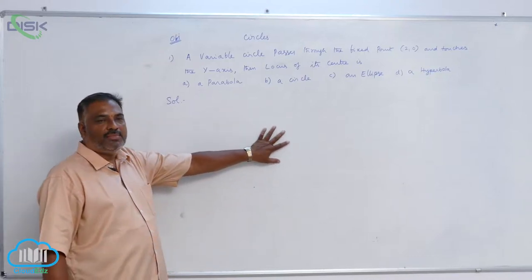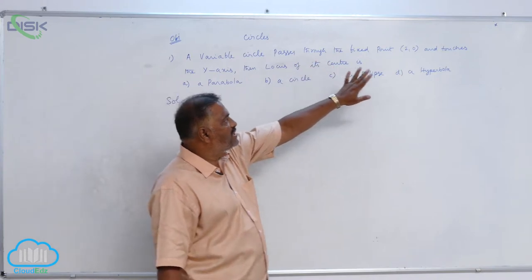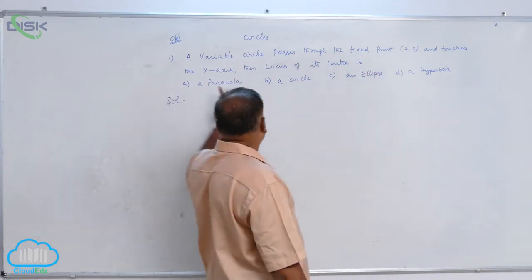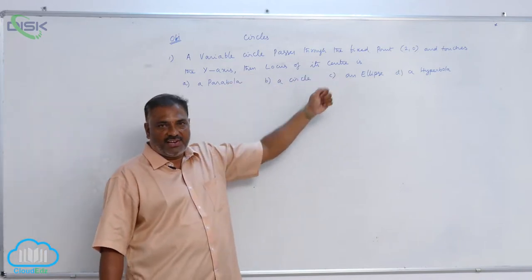We will discuss a problem related to circles. A variable circle passes through the fixed point (2, 0) and touches the y-axis. Then locus of its center is?